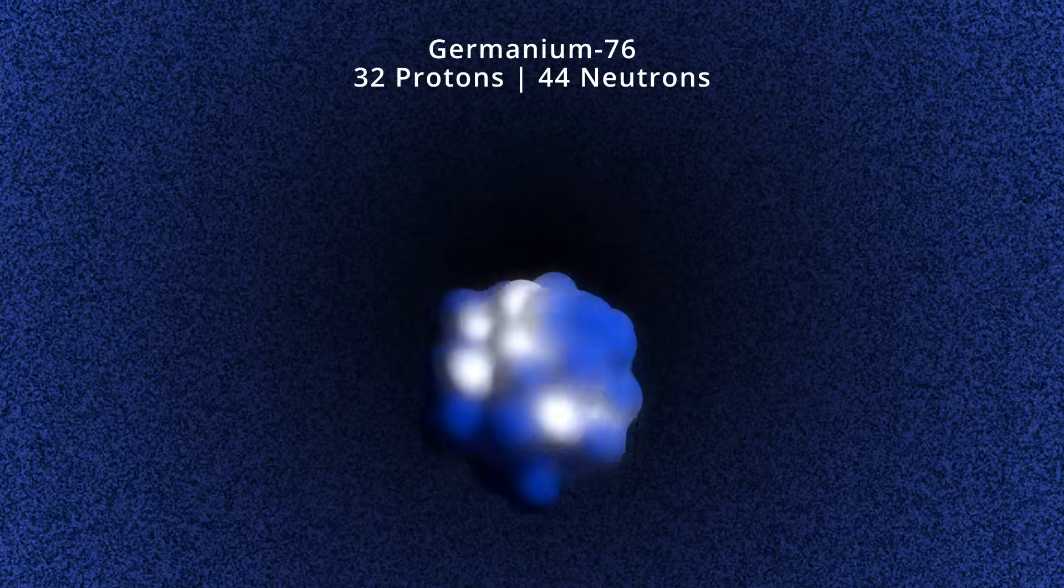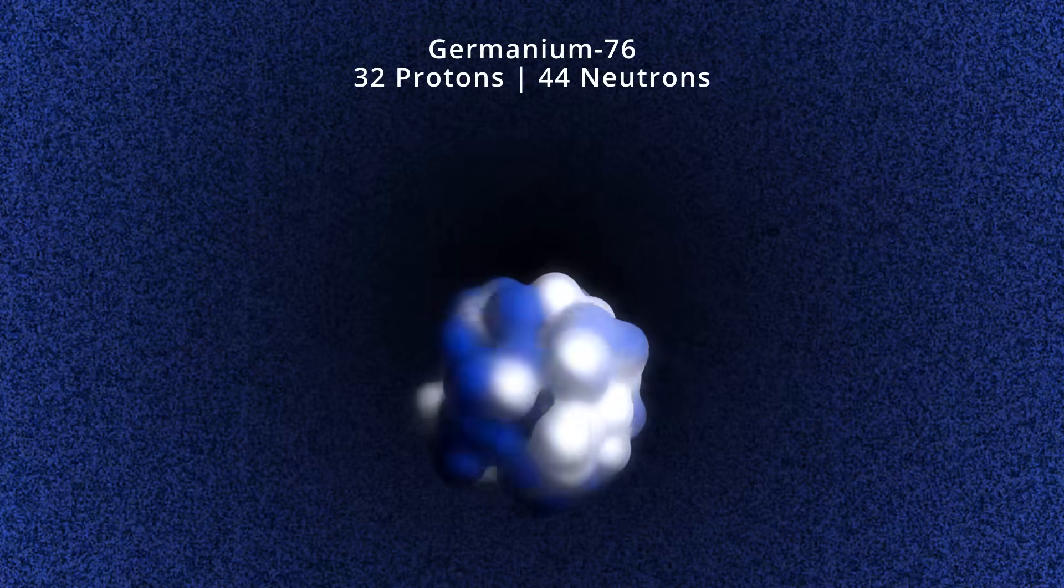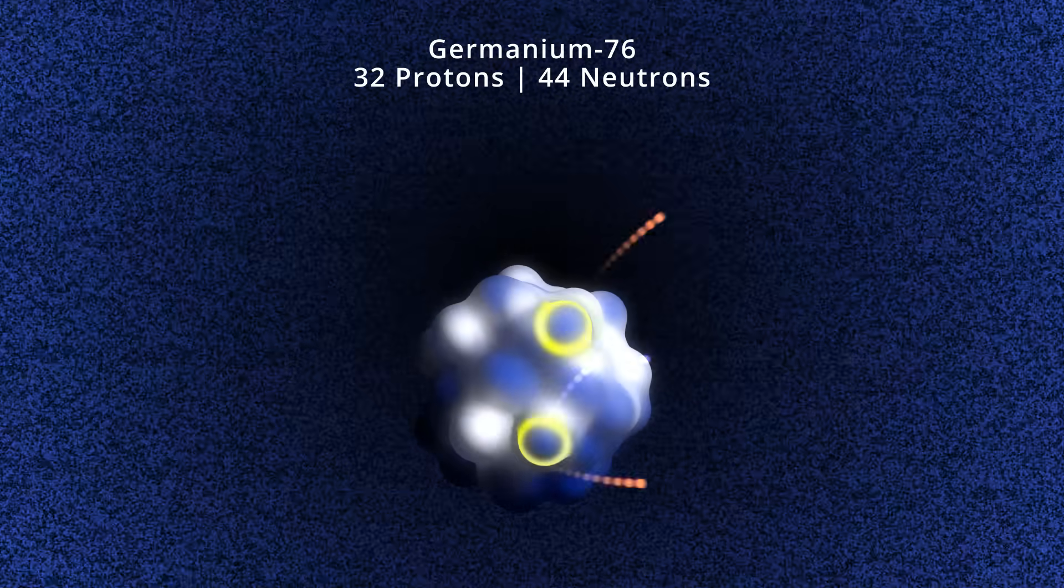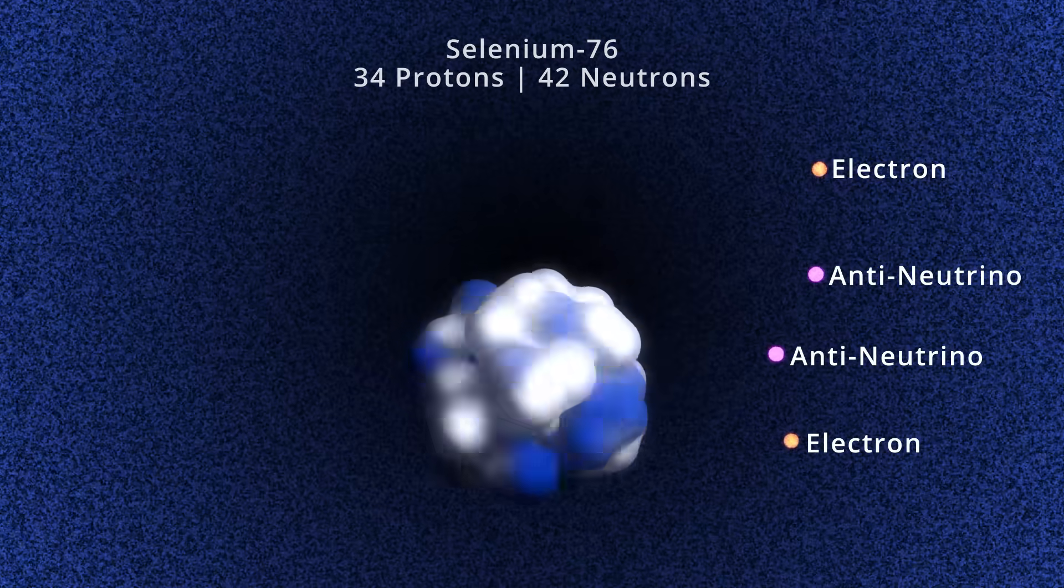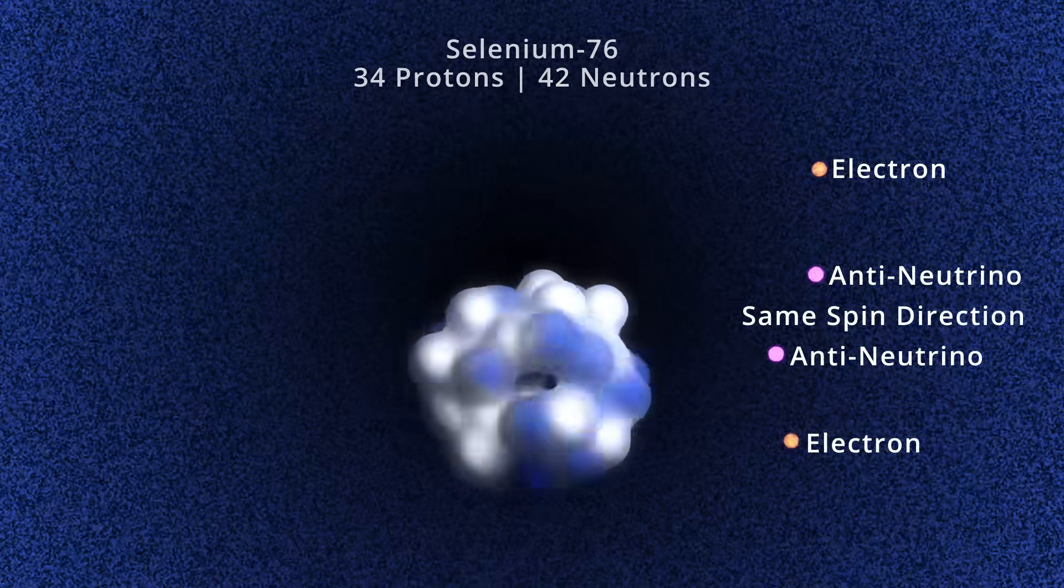But what about neutrinos? If a neutrino is its own antiparticle, then two neutrinos can annihilate each other. In the double beta decay process, both antineutrinos are created with the same helical spin direction.